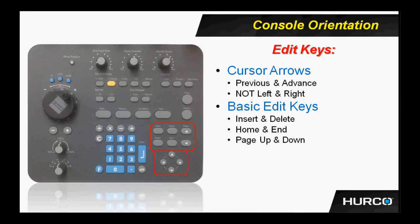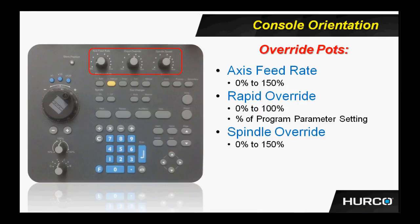The override potentiometers: we have the axis feed rate to the left, which has a setting from zero to 150%, so these potentiometers can be used to stop movement. We have the middle one for rapid override, from zero to 100% of whatever the program parameter setting is for your particular machine. Although a machine may be capable of rapiding at 1300 inches a minute, you may have chosen to set the program parameter to a smaller value, so the rapid override is a percentage of whatever setting you have put in that program parameter. The one on the far right is the spindle speed override, which has a setting from zero to 150%.